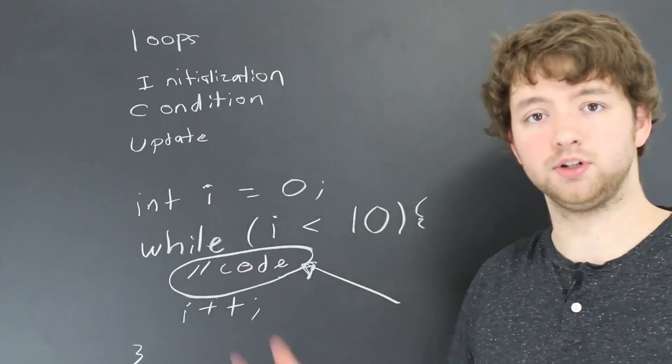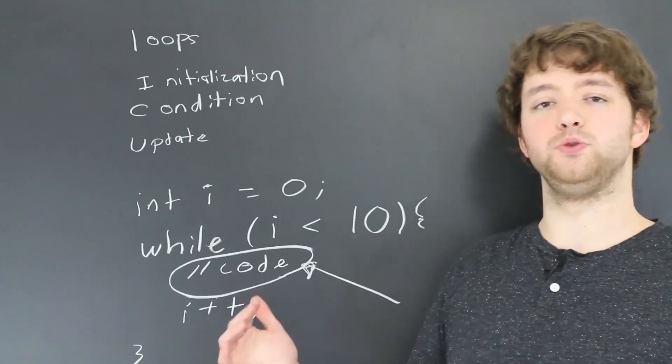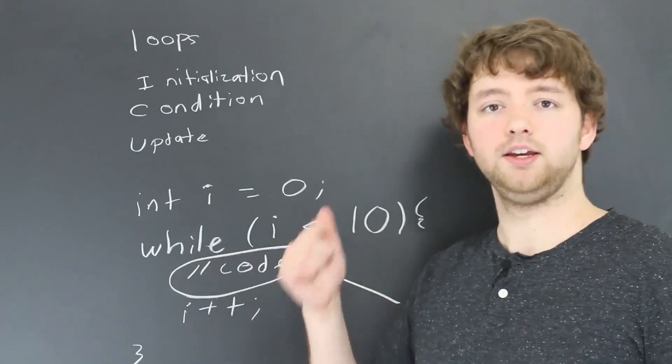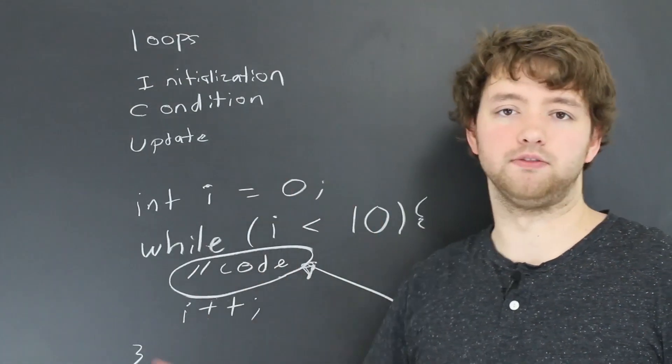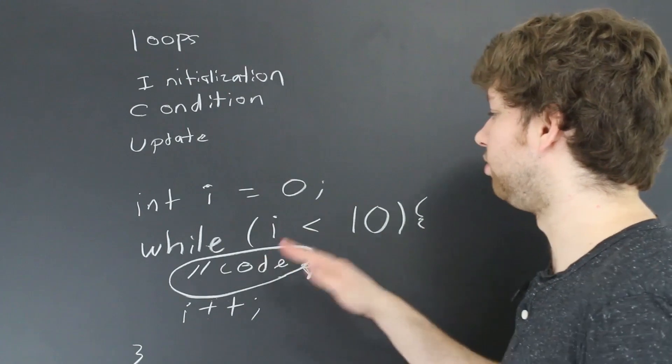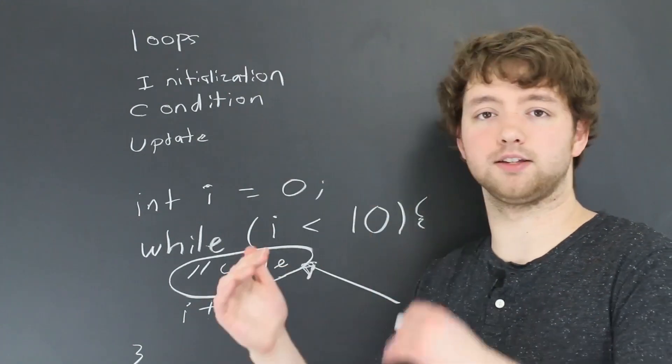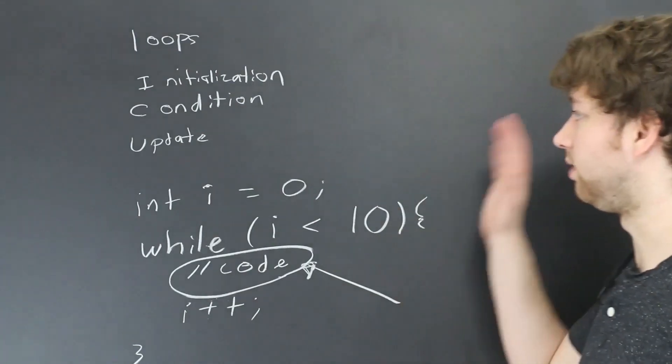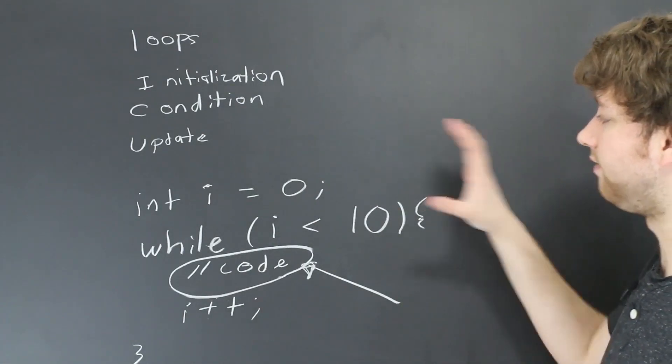So we can actually access this i variable inside of this code. It's just a variable like any other variable. So this means we can use loops to do things like count. For example, if we output i, it's going to basically show the value of i each iteration and put that out on the console. There's lots of things we can do inside of this code area. We can access arrays and all kinds of fun stuff.